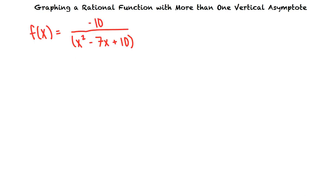Let's say we want to graph the rational function f of x equals negative 10 divided by x squared minus 7x plus 10. To find the vertical asymptotes, we will first need to factor the denominator. The denominator factors into x minus 2 times x minus 5.